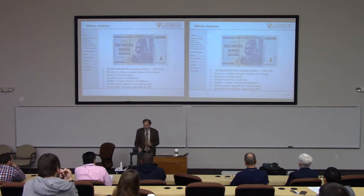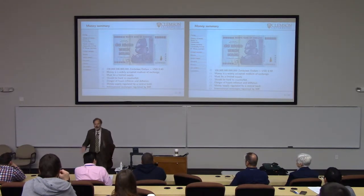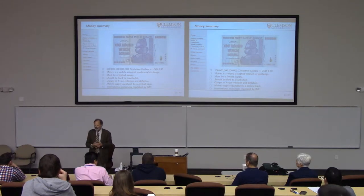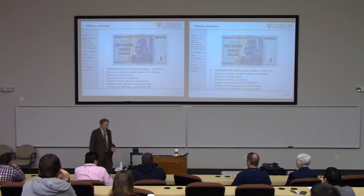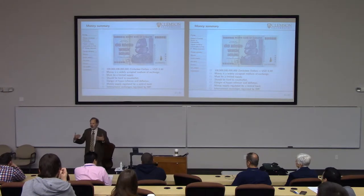What could you buy with Zimbabwe dollars? With $100 trillion dollars, you could get something basically worth 40 cents. It should be hard to counterfeit, and there's always a danger of hyperinflation or deflation. With the Zimbabwe dollar, the individual units of currency become worthless. Around the time the Nazis took over in Germany, they were suffering from hyperinflation — you had to have a wheelbarrow full of money to buy basic necessities. On the other hand, you can also have deflation. The Japanese economy has trouble because money is becoming more and more valuable, so people are actually buying less, which breaks industry.